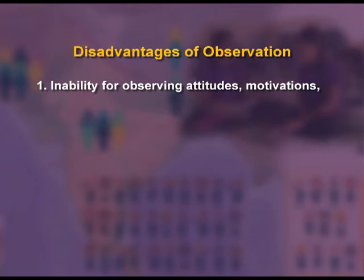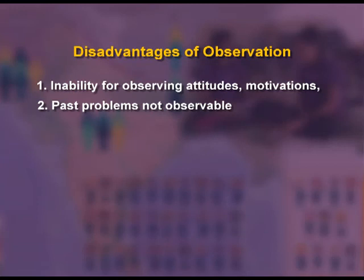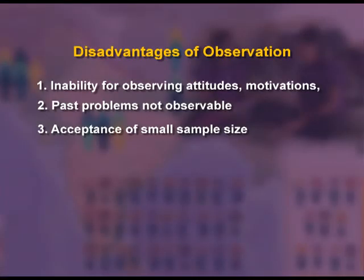Disadvantages of observation: First, observation method has the inability to observe attitudes, motivation, state of mind, intention, and images of subjects. Second, past problems are not observable — problems of the past cannot be studied by means of observation. Third, it accepts a small sample size because observation involves a lot of time as one has to wait for an event to happen, so only a small sample is undertaken.